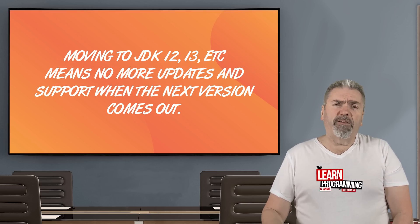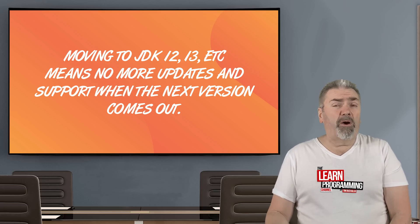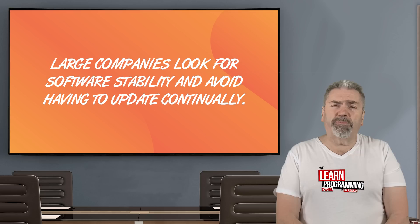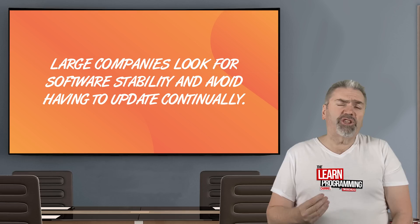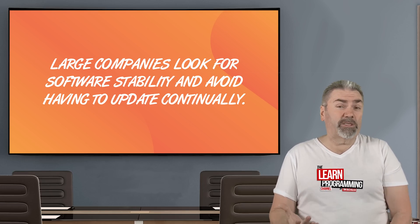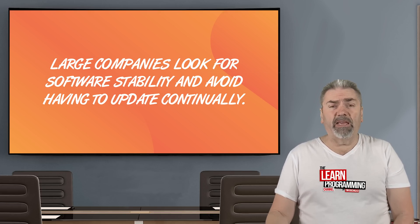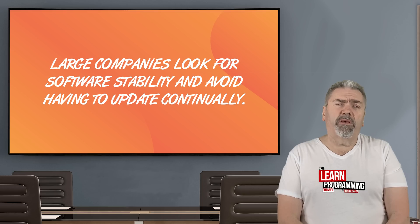Basically if you start using JDK 12, you're really committing to updating your software every six months, before the support expires and there are no longer any future updates. From a company's perspective, if they've got a large team of people and a large investment in a particular version of the JDK, they generally don't want to update on such a quick release cycle. For a large application, six months would be considered quite a short period of time to keep things updated.